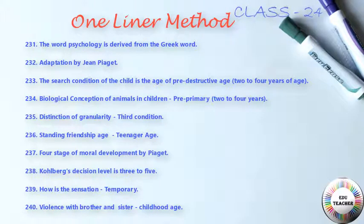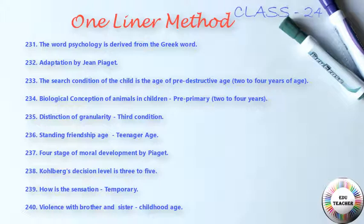Next: destruction of granuity is the third condition. Next: standing friendship age is on teenage age. Next: four stages of moral development by Piaget. Next: Kohlberg's decision level is three to five. Next: how is the sensation? It's temporary.